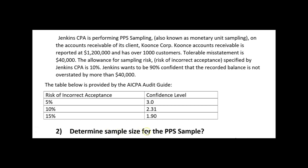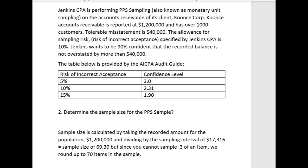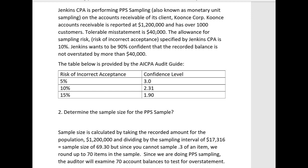Now, what do we do with the sampling interval? Question two: determine the sample size for the PPS sample. The sample size is calculated by taking the recorded amount for the population — $1.2 million — and dividing by the sampling interval of $17,316. That gives 69.3, but since you cannot sample 0.3 of an item, we round up to 70 items. Since we're doing PPS sampling, the auditor will examine 70 account balances to test for overstatement of accounts receivable.